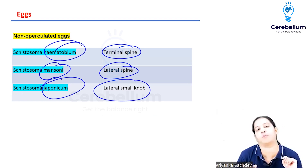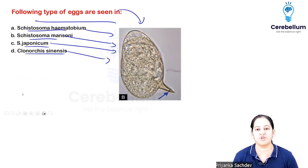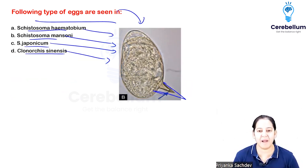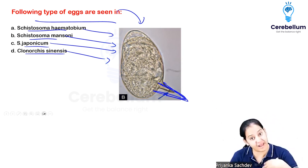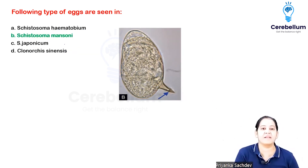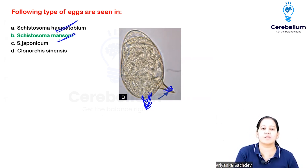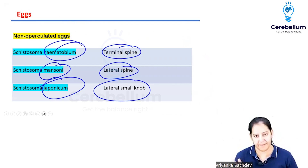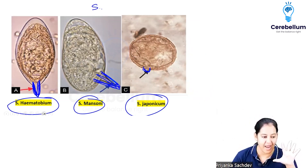Now have a look at your diagram and tell me the answer: where is the spine - is it terminal or lateral? Is it a knob or a spine? You will get questions on all three images, so image-based questions are very important.